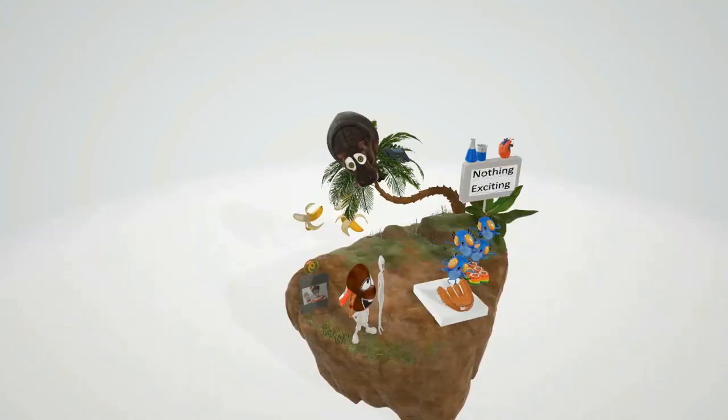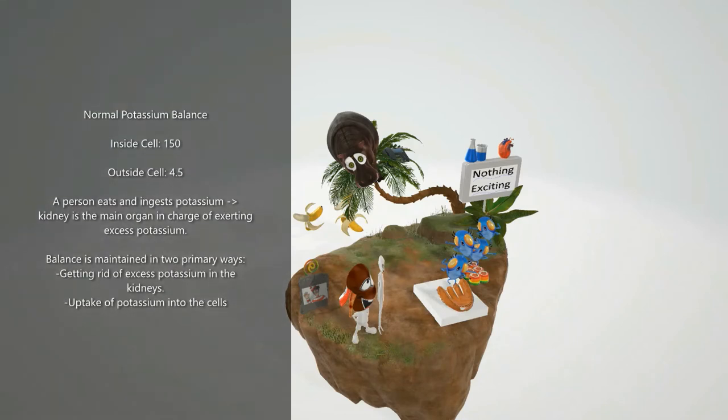For us to understand the causes of hypokalemia, we have to understand one thing. And that's that the body wants to maintain a normal balance of potassium inside and outside the cell. Normally potassium inside the cell is at about 150 milliequivalents per liter. Whereas on the outside, it's usually at 4.5. Normally when a person eats during the day, they ingest tons of potassium. So the body has to have a way to get rid of this potassium.